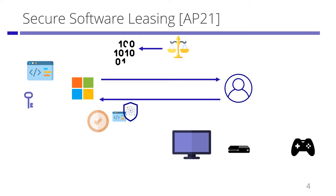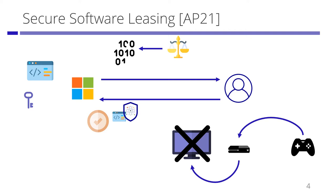At some point, the lessee returns the leased software to the lessor. The lessor checks whether the returned software is a valid leased software or not. After the lessee returns the leased software, they cannot run the software anymore. That is, leased software must be a quantum state, since we can easily copy classical information.